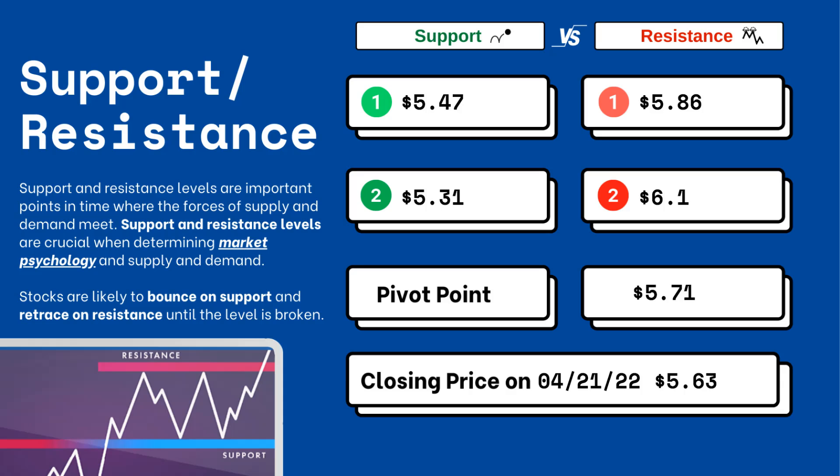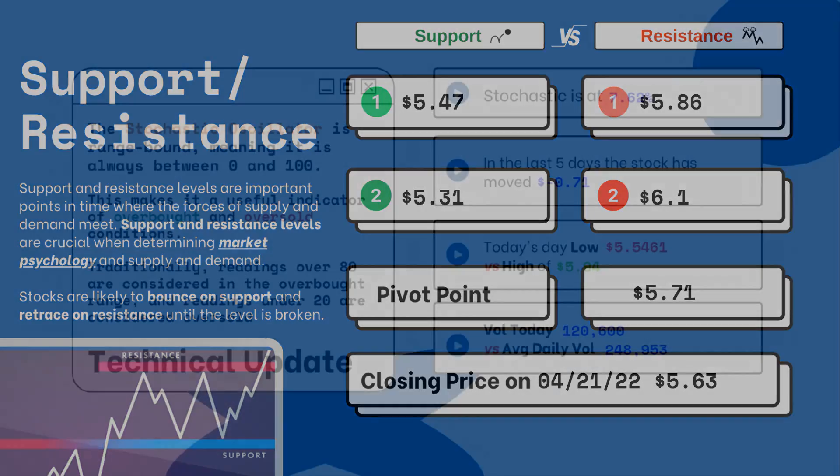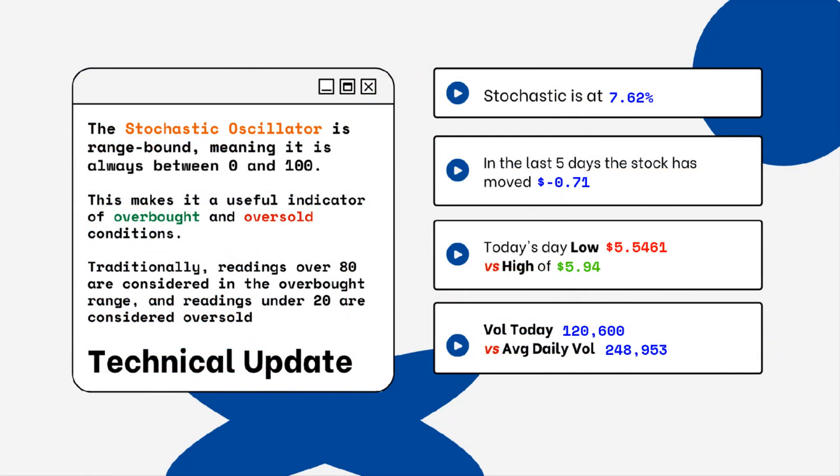These are areas that you want to watch when looking at this particular stock. Stocks typically bounce at support levels and resist at resistance levels, meaning they'll retrace from that top level. You can see on the right side where the stochastic level is on this particular stock. This is only a technical update.